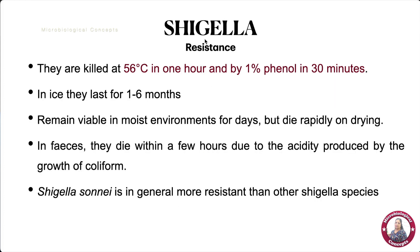Regarding resistance patterns, Shigella species are killed at 56°C in one hour and by 1% phenol in 30 minutes. In ice, they can survive for one to six months and can remain viable in moist environments for days. They die rapidly on drying, and in feces they die within a few hours due to acidity produced by coliform growth. Shigella sonnei is more resistant than other species.